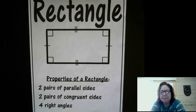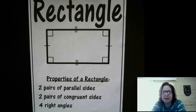This is a rectangle. It has two pairs of parallel sides, two pairs of congruent sides - that means the same - and four right angles.